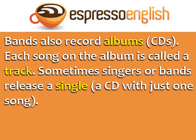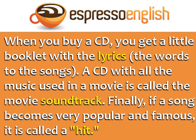Bands also record albums — CDs. Each song on the album is called a track. Sometimes singers or bands release a single, that's a CD with just one song. When you buy a CD, you get a little booklet with the lyrics. A CD with all the music used in a movie is called the movie soundtrack. Finally, if a song becomes very popular and famous, it is called a hit.